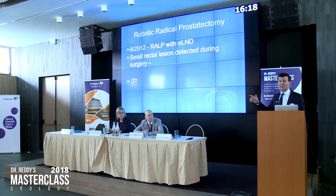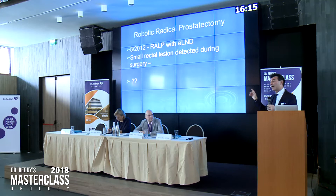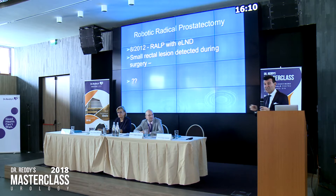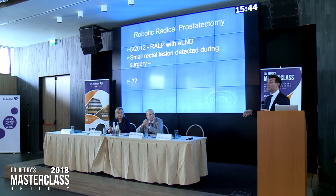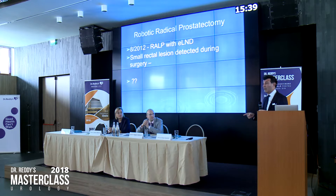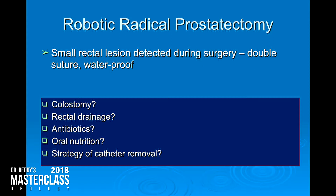We did a robotic radical prostatectomy — it was one of the first cases we did, and we weren't that experienced. We had a small rectal lesion during the operation. Bernardo Rocco was in Vienna at that time and we did it together. We saw the lesion, so we did immediate robotic closure — two layers of the rectum, always two layers. Waterproof, monocryl suture.